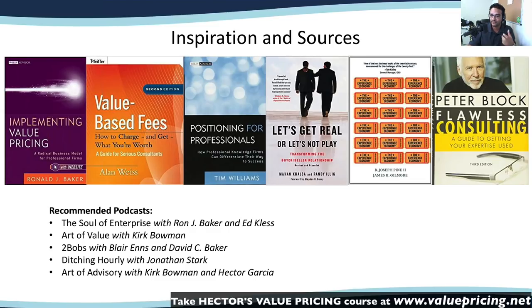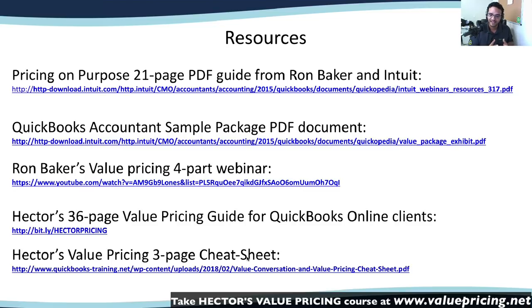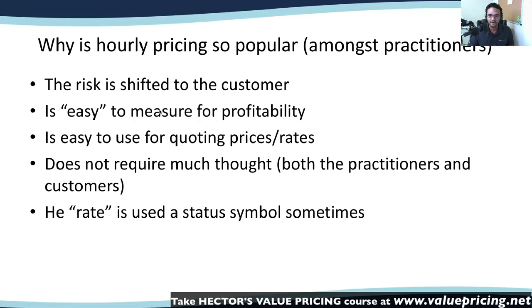There are also five podcasts I recommend if you're a podcast person: The Soul of Enterprise, Art of Value, Two Bobs, Ditching Hourly, and my own podcast called The Art of Advisory. In the slides, there are five links I recommend: a PDF from Ron Baker's Pricing on Purpose Guide, a sample package PDF from Intuit showing how to present options to customers, Ron Baker's four-part webinar — about eight hours of video — plus my own 36-page value guide and three-page cheat sheet.